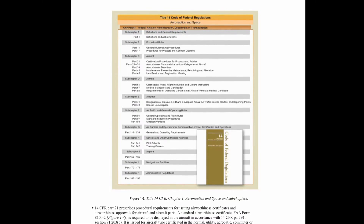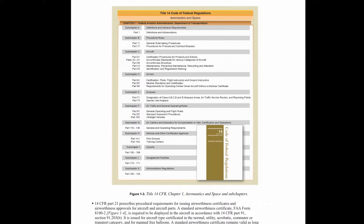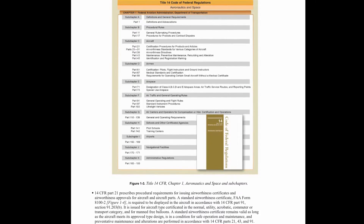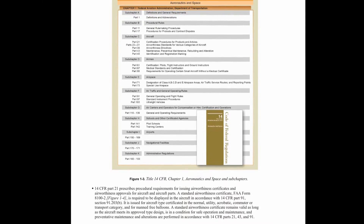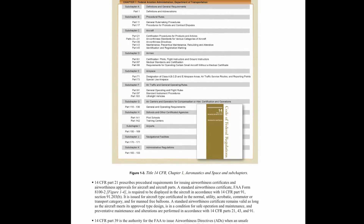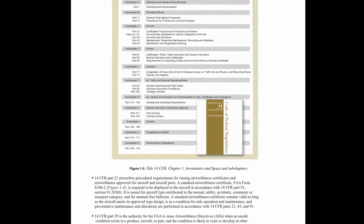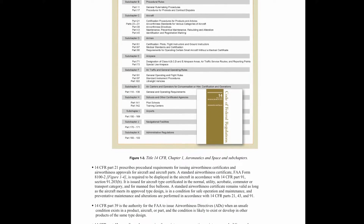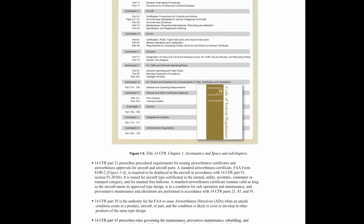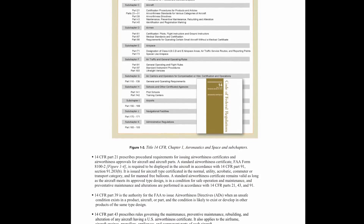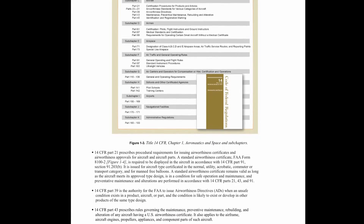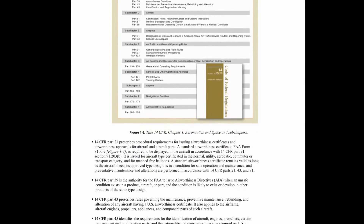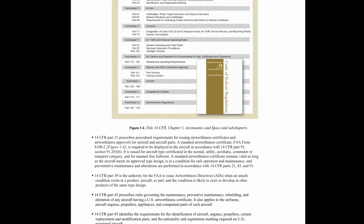14 CFR Part 21 prescribes procedural requirements for issuing airworthiness certificates and airworthiness approvals for aircraft and aircraft parts. A standard airworthiness certificate (FAA Form 8100-2) is required to be displayed in the aircraft in accordance with 14 CFR Part 91, Section 91.203(b). It is issued for aircraft type-certificated in the normal, utility, aerobatic, commuter, or transport category, and for man-free balloons. A standard airworthiness certificate remains valid as long as the aircraft meets approved type design, is in a condition for safe operation, and maintenance, preventative maintenance and alterations are performed in accordance with 14 CFR Parts 21, 43, and 91.